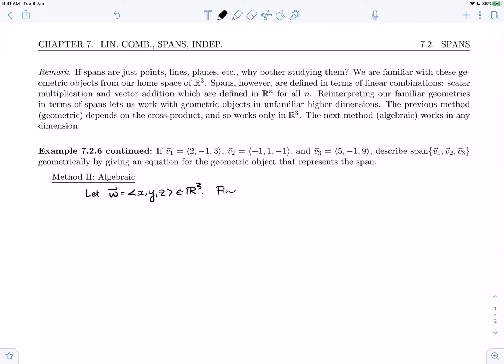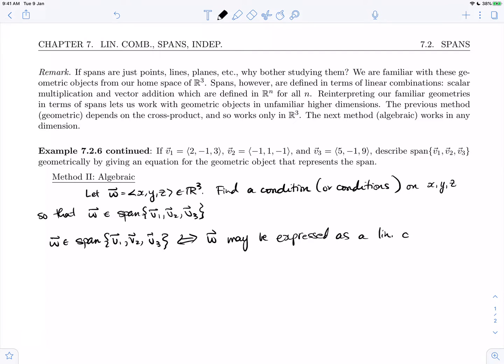We are going to find a condition—in this example it will be one condition, but it might be more, so I'll put or conditions on x, y, and z so that w will be part of the span of these vectors v1, v2, and v3. We know that w is in the span of a collection of generating vectors if and only if w can be expressed as a linear combination of the generators v1, v2, and v3.